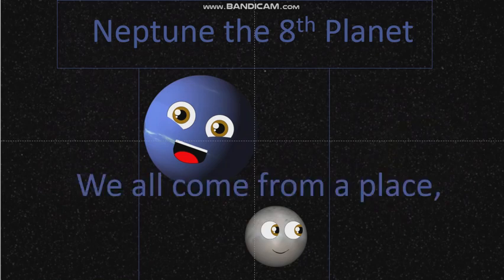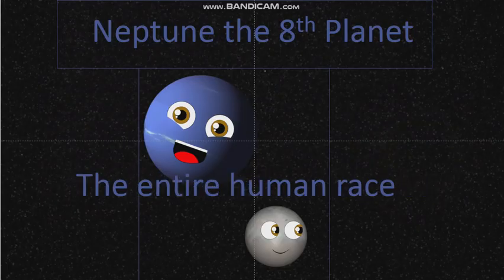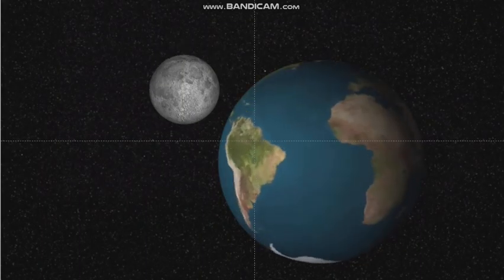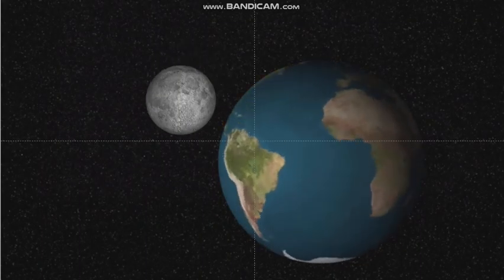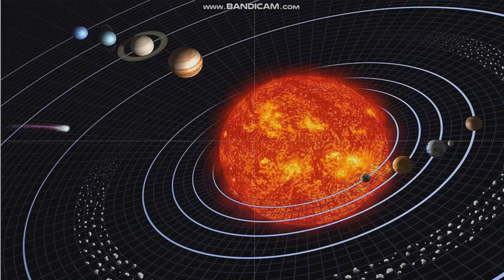We all come from a place, the entire human race depends upon our planet, racing through outer space. And there are eight planets that orbit around the sun. Come on, we'll introduce you and name them one by one.